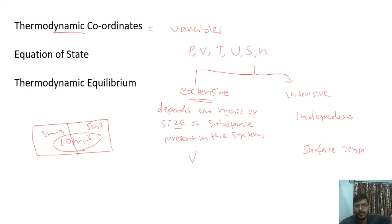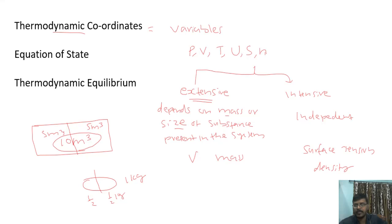Another example is density. If you have a system with mass 1 kilogram and divide it into two equally, you get two half-kilogram parts — mass changes. But density will not change if you divide it, because density is mass divided by volume. Similarly, entropy is extensive, and number of moles is extensive. Pressure and temperature are all intensive quantities.